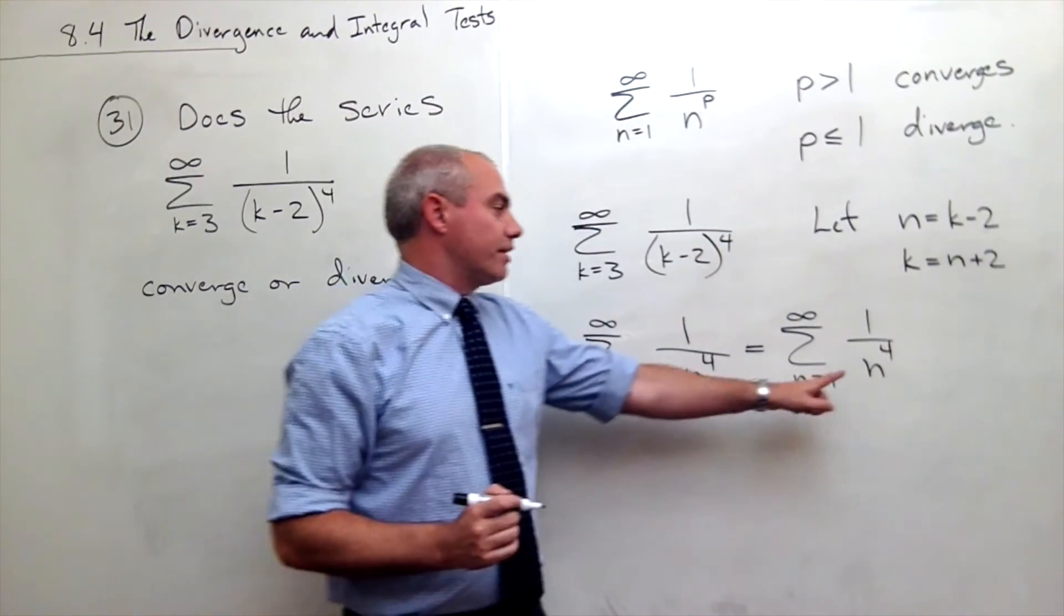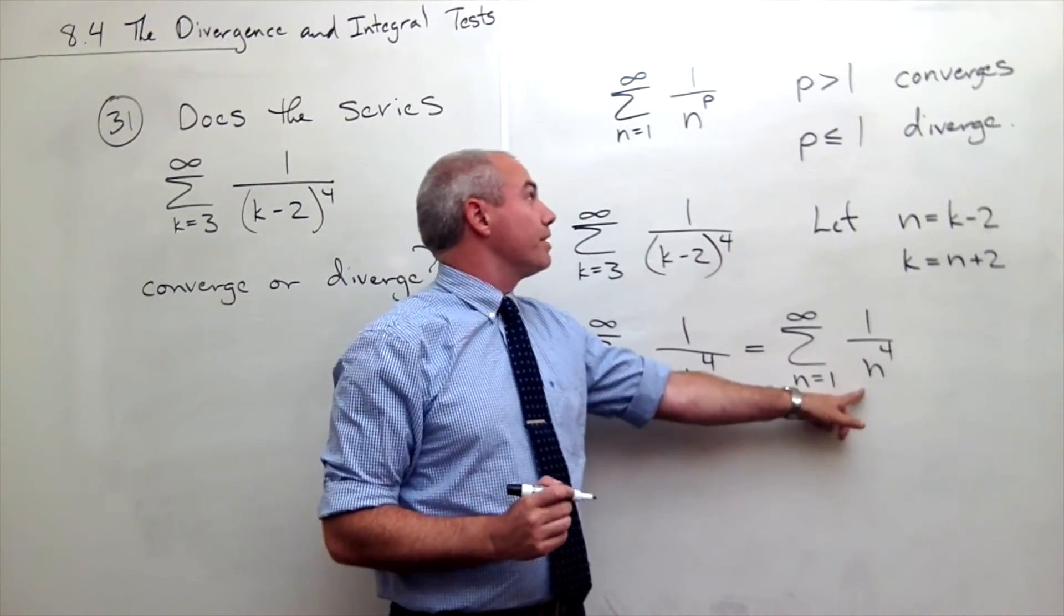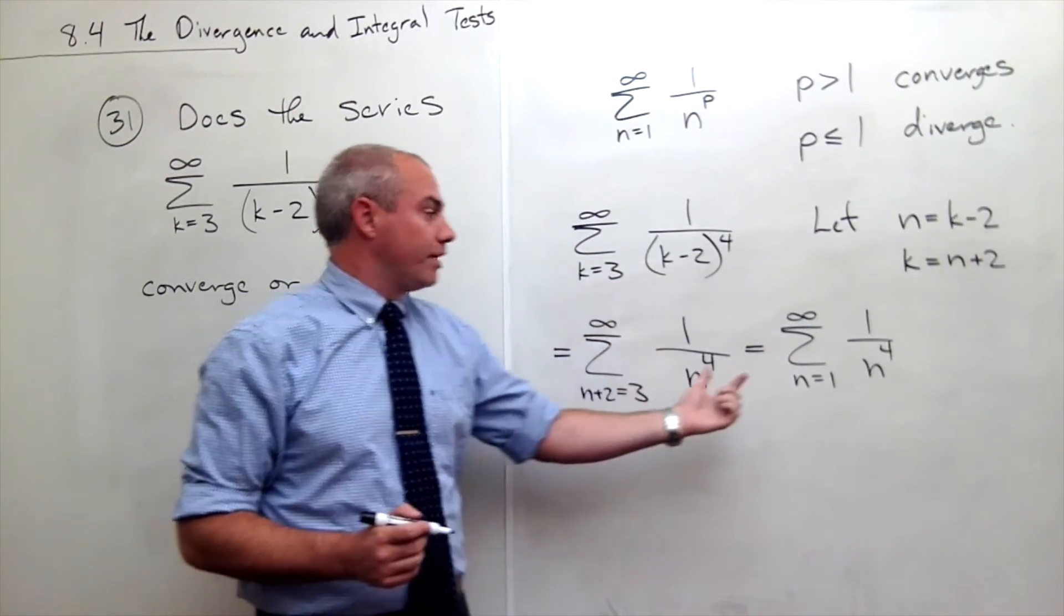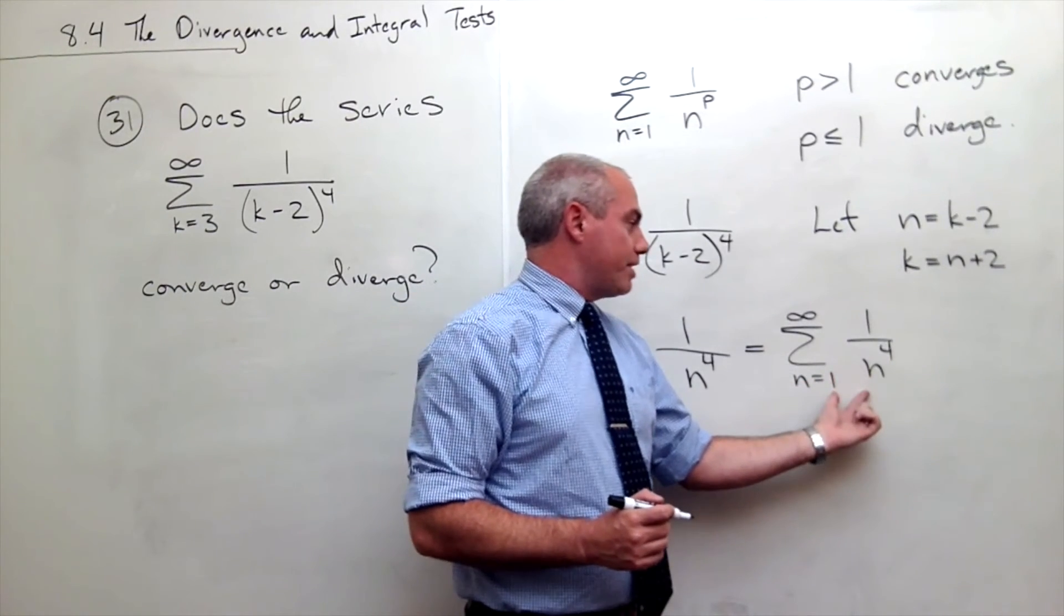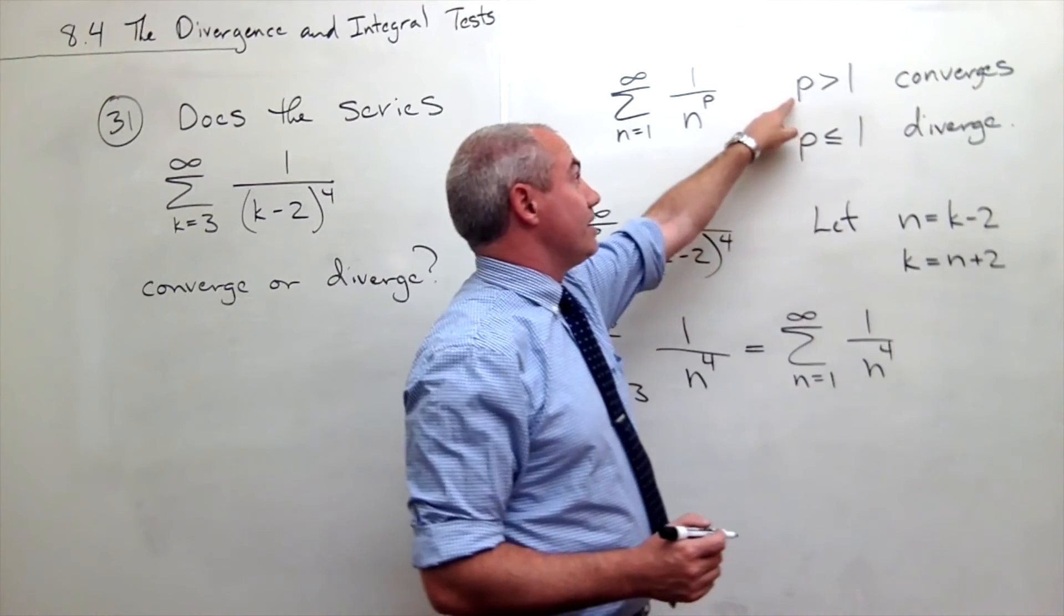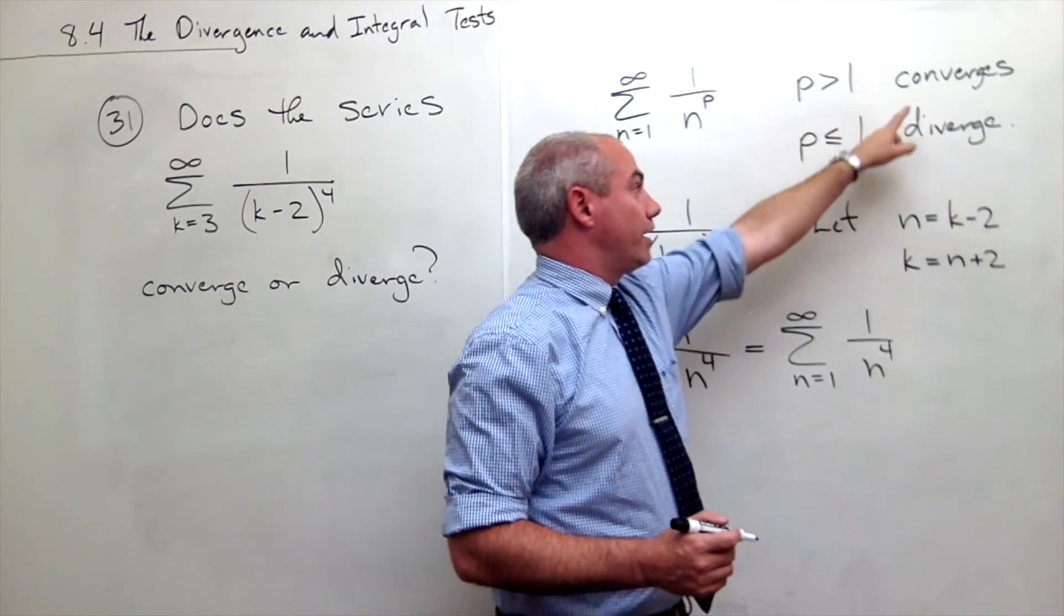But now you see that this is exactly a p-series. This was too, it was just in a disguised form. But now we can see this is a p-series with p equals 4. If p is bigger than 1, it converges.